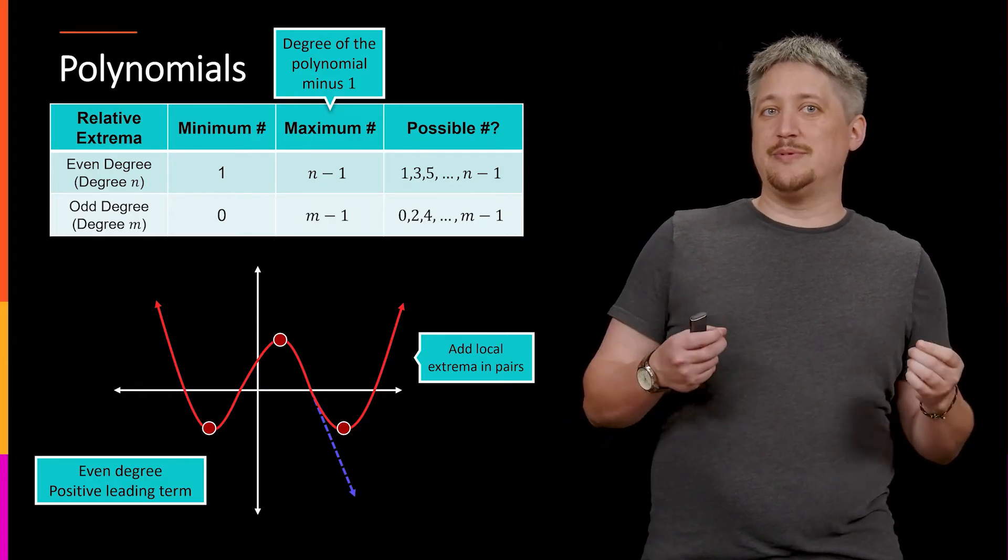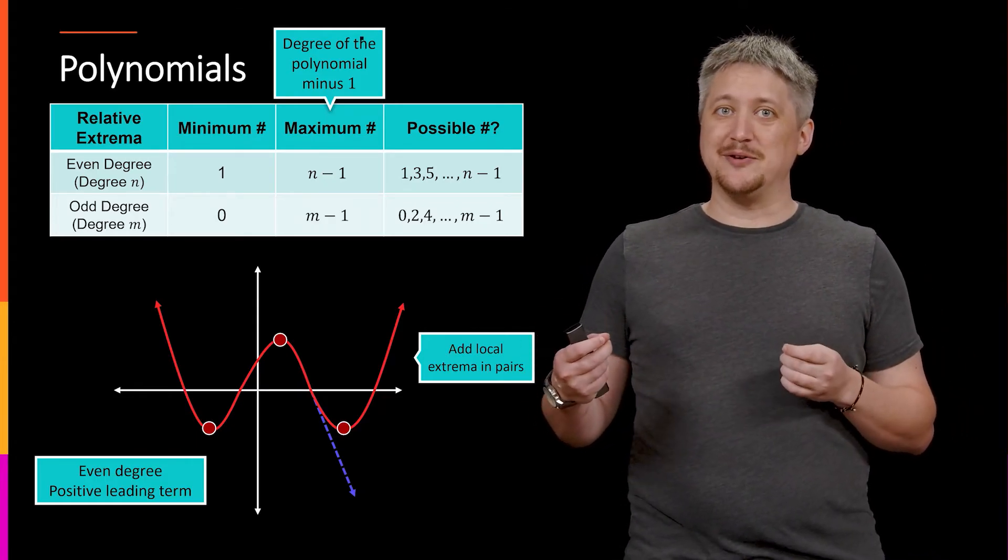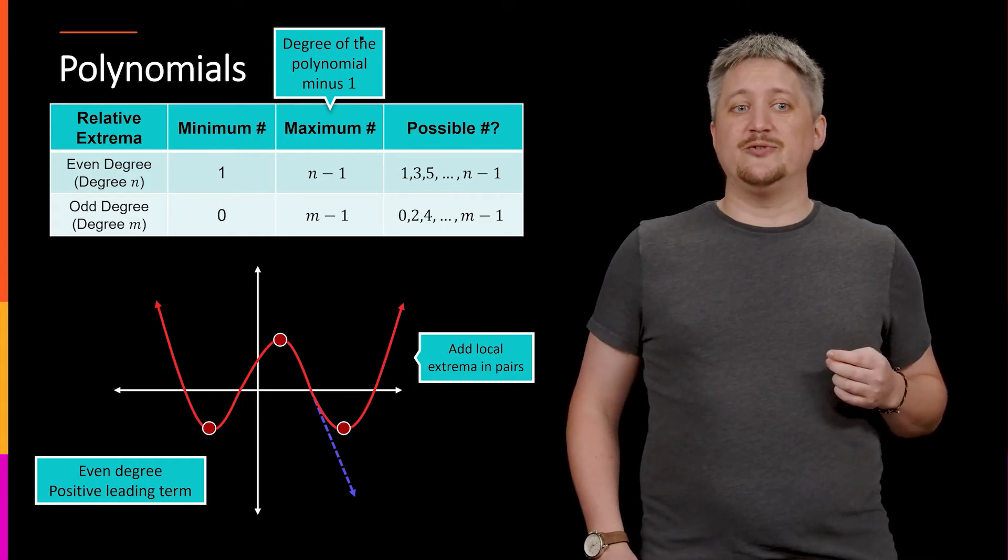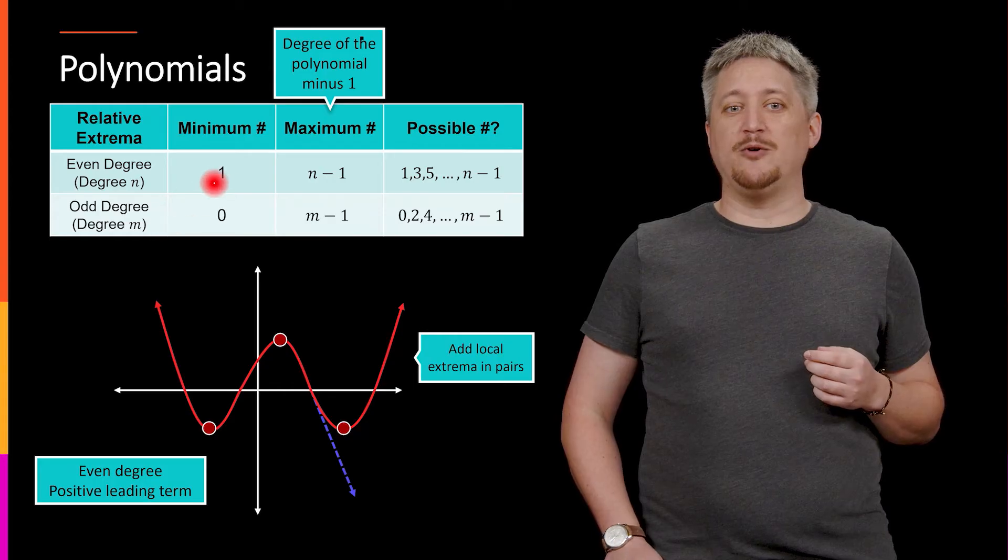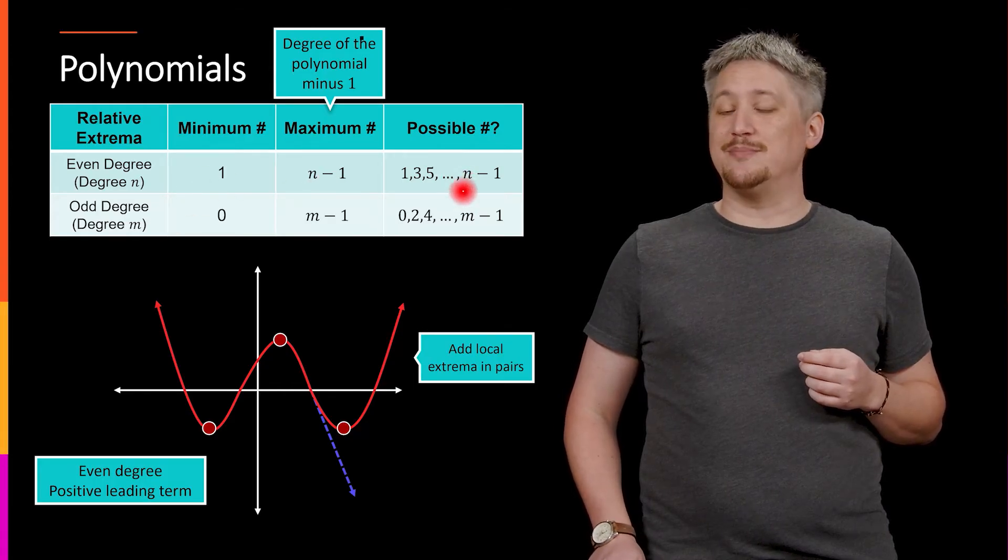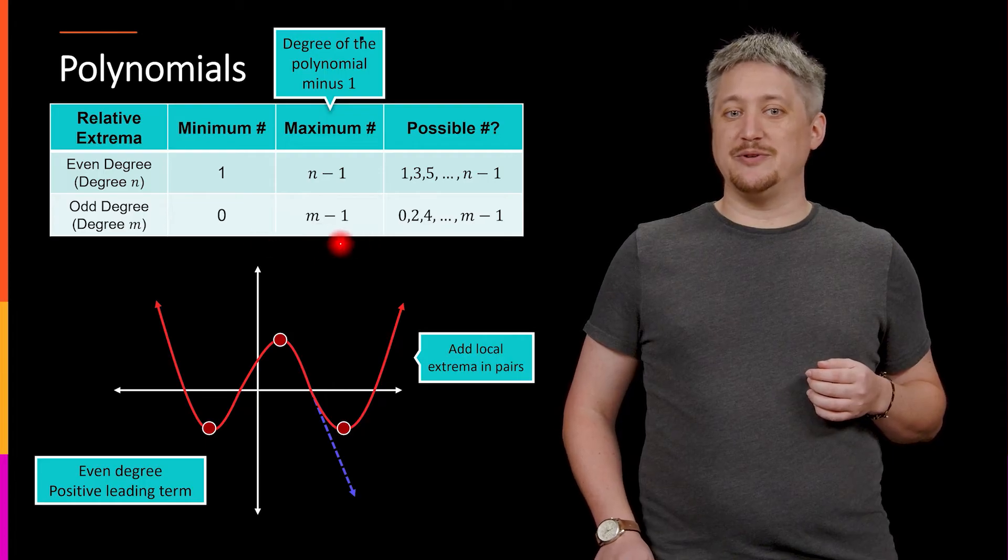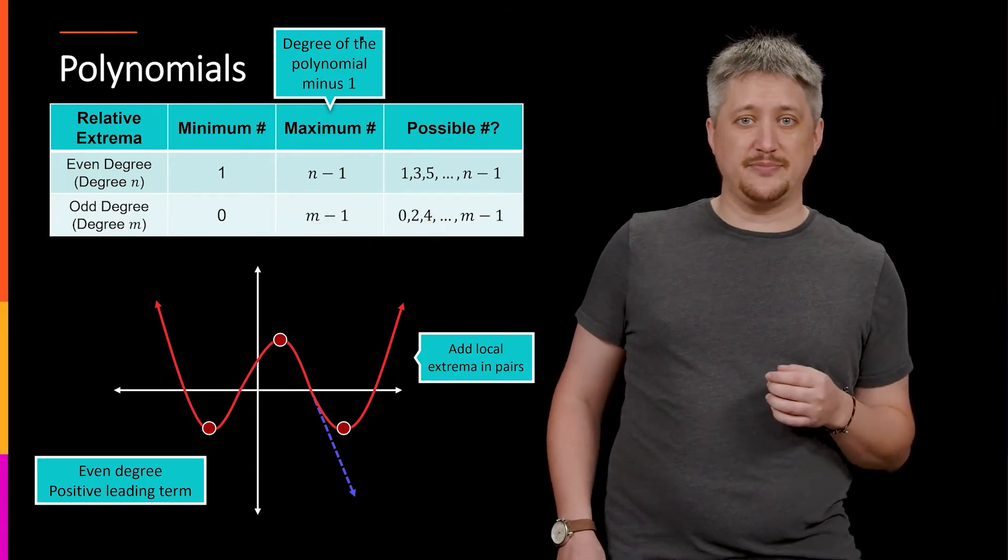So I have a lower bound and an upper bound, but I can actually do a little bit better where I also have them appearing in pairs. So it tells me that I have between one and n minus one, but only odd numbers. Or if it's odd degree, zero, between zero and the degree minus one, but only even numbers.